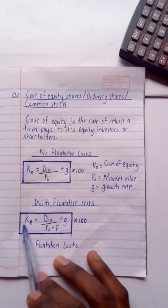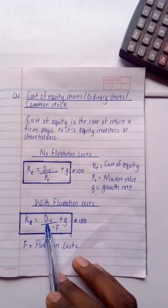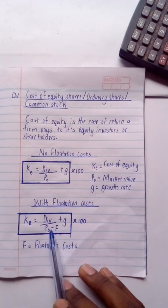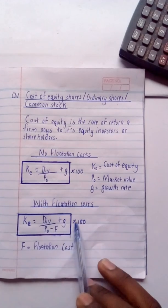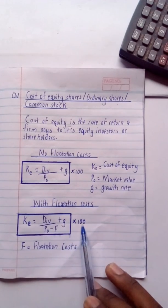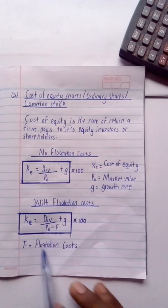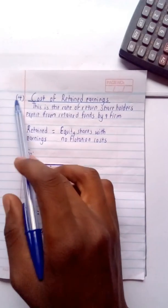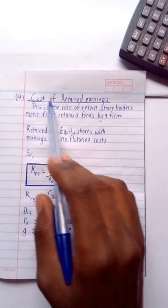When flotation costs are present, the cost of equity formula becomes: Ke = [Div / (P₀ − F) + g] × 100, where F is the flotation costs.